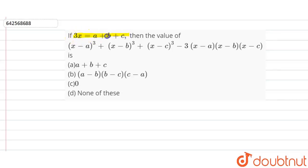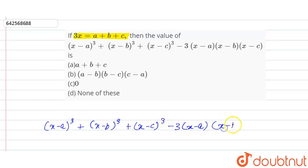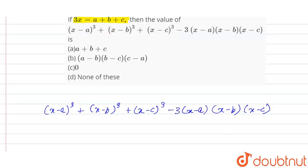We are given that 3x is equal to a plus b plus c, and we have to find the value of the given expression: (x minus a) whole cube plus (x minus b) whole cube plus (x minus c) whole cube, minus 3 times (x minus a) into (x minus b) into (x minus c).